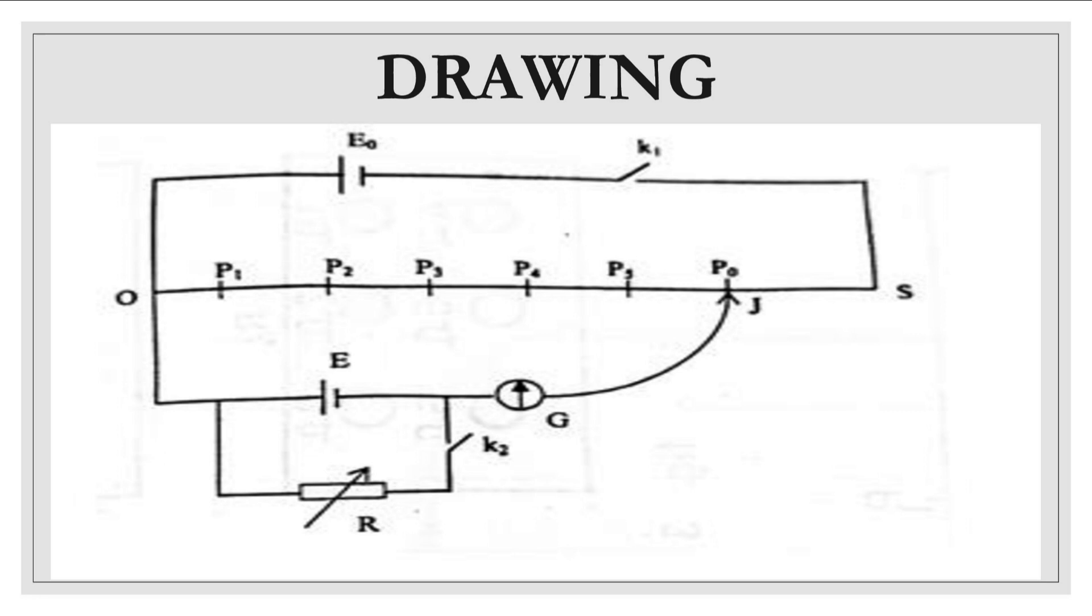Now in this particular experiment the instruction and the procedure is as it is done in the laboratory and the jockey points at no deflection according to the reading of the galvanometer is at P naught. Then for different resistances we have the jockey at point P5, P4, P3, P2 and P1.